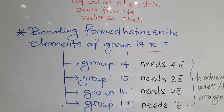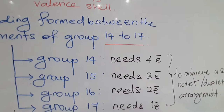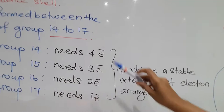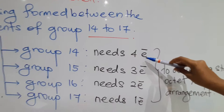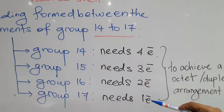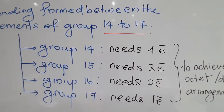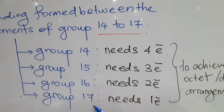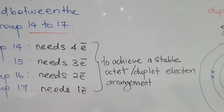Let's look at group 14. Group 14 has 4 valence electrons, so for them to achieve a stable electron arrangement, they need 4 more electrons. They will share their valence electrons with elements within group 14 to 17 to achieve a stable duplet or octet arrangement. Group 15 needs 3 more, group 16 needs 2 more, and group 17 needs 1 more electron.